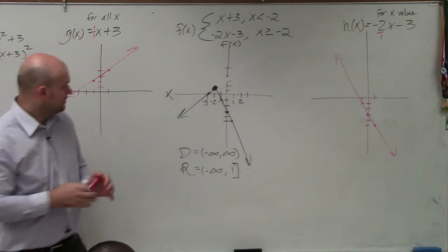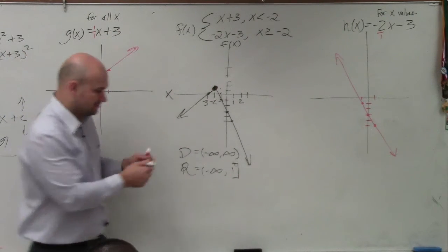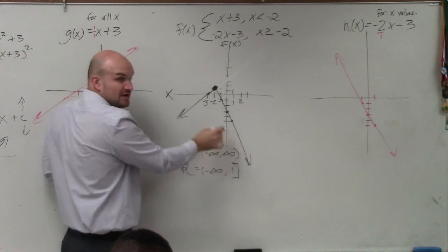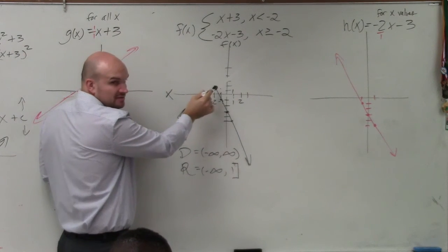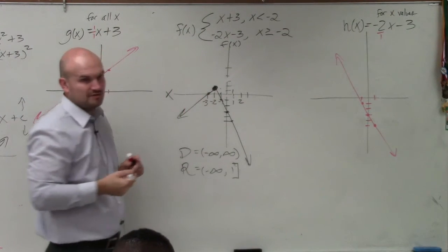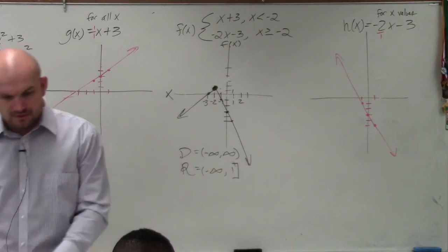Yes? Wait, why is it filled-in dot? Because 1 is included. 1 is a value 1 on my range, right, is a part of the graph. Right? But 0 is not a part of the graph. I'm sorry. If it was open, it would not be a part of the graph. Okay?